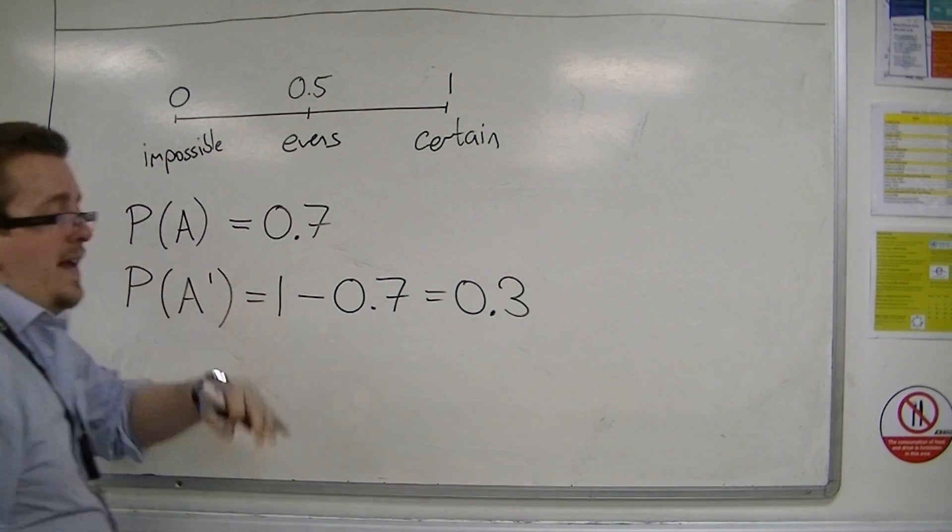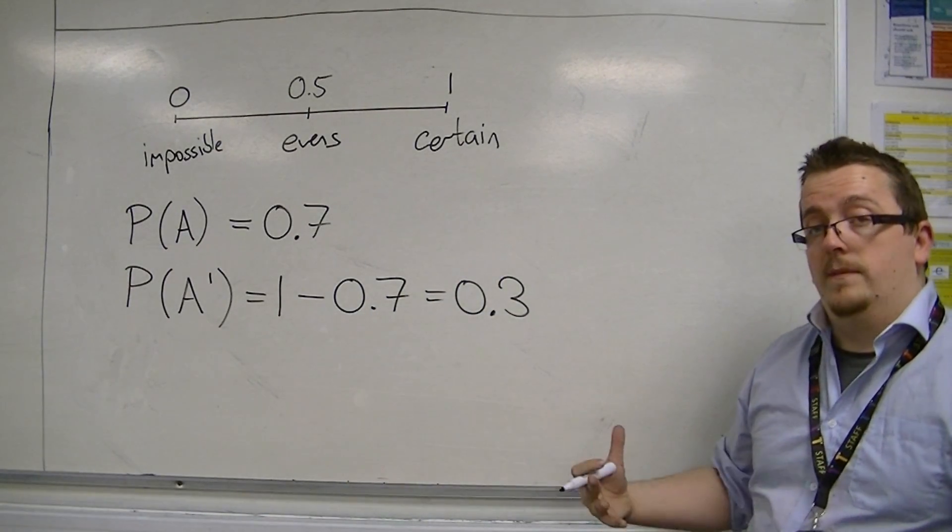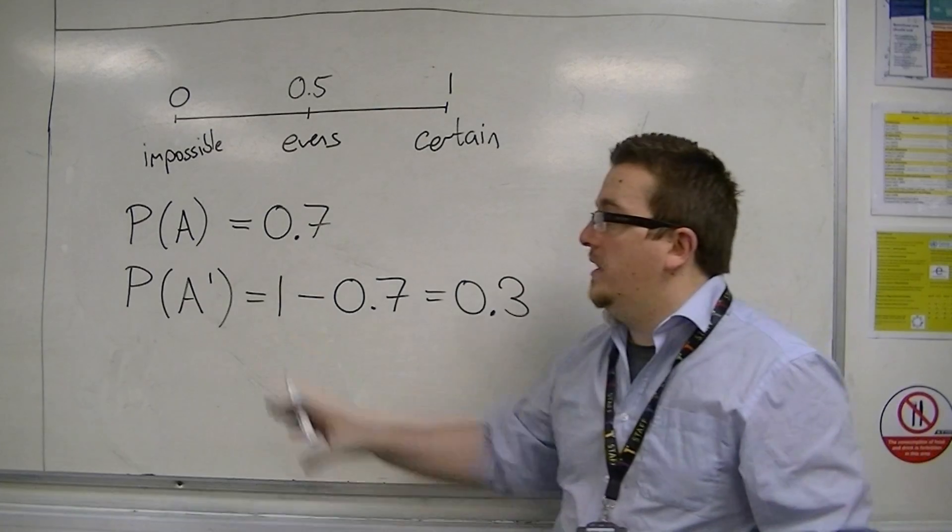So the probability of A happening is 0.7, so the probability of A not happening is 0.3. So this is the notation that we're going to be using.